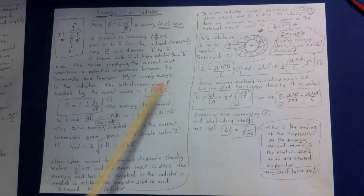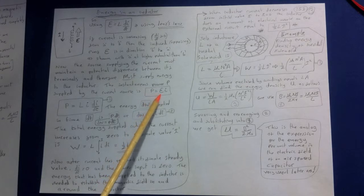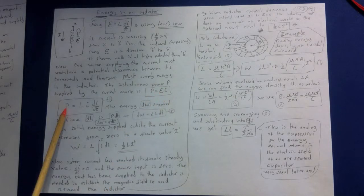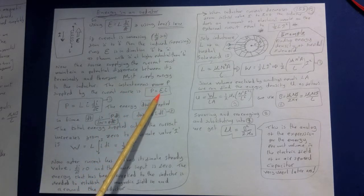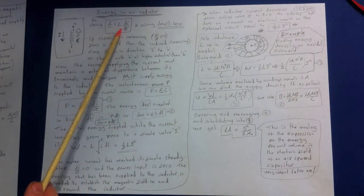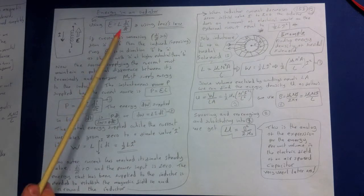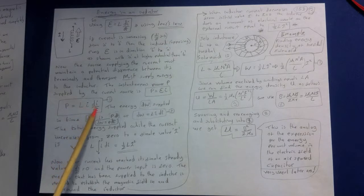The instantaneous power P supplied by the current source is P equals the electromotive force times the current, which is that standard equation for power. In this case, we know that the EMF is given by this inductance. So we can plug that in and we end up with Li di by dt.